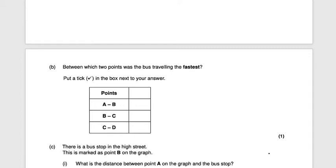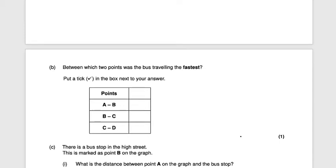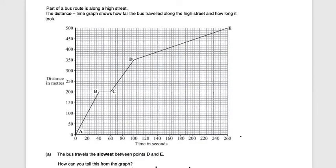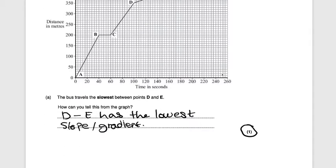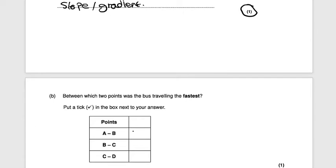Between which two points was the bus traveling the fastest? The steepest gradient gives the fastest speed. The two possibilities are A to B and C to D, but A to B is a steeper line. If unsure, you could calculate distance divided by time to find which gradient is largest. So A to B is the correct answer for one mark.